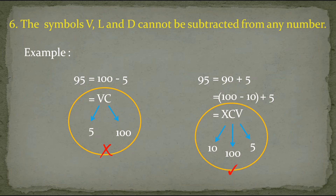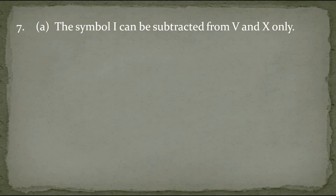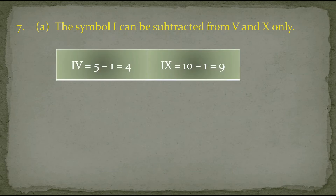Now let's see the next rule. The seventh rule says that the symbol I can be subtracted from V and X only — we can write I to the left of V or X, but not to the left of any other symbol. So there are only two possibilities: IV equals 5 minus 1 which equals 4, and IX equals 10 minus 1 which equals 9.